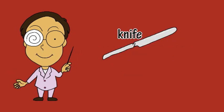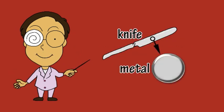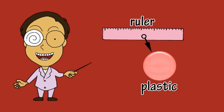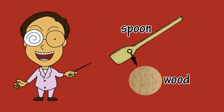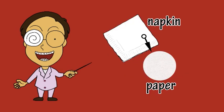For example, this knife is made of metal. This ruler is made of plastic. This spoon is made of wood. This napkin is made of paper.